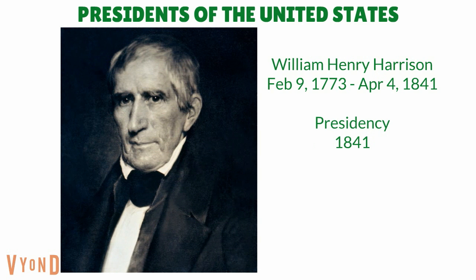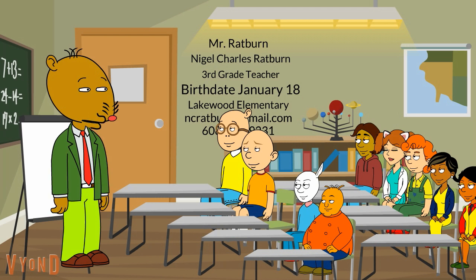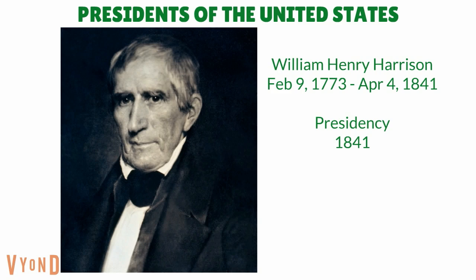William Henry Harrison was our ninth president of the United States. He was born on February 9th, 1773. He was a president only in 1841. Mr. Ratburn, why was he president only in 1841? Well, I'll tell you the reason why right now. On March 4th, 1841, on his inauguration day, on a cold and wary day, he wasn't bundled up. He even delivered the longest speech, amounting to 8,445 words, for an hour and 45 minutes.